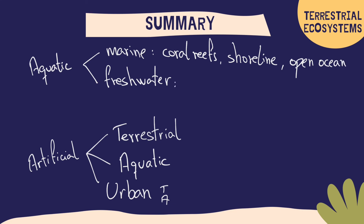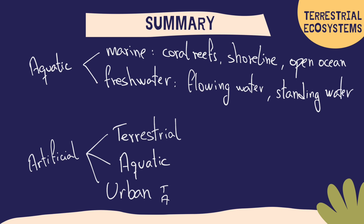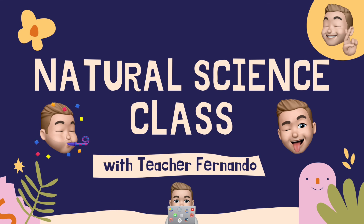The freshwater ecosystems include those with flowing water and those with standing water. For example, in flowing water we have rivers, and in standing water we have lakes and ponds. That was all for this video. I hope you liked it and see you in the next one. Bye!